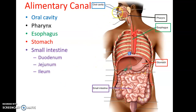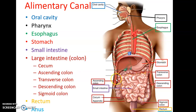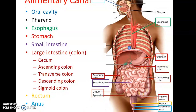The alimentary canal starts with the oral cavity, goes to the pharynx, and from there the esophagus carries food down to the stomach. The stomach leads into the small intestine, broken up into the duodenum, the jejunum, and the ileum. From there it goes to the large intestine: the cecum, the ascending colon, transverse colon, descending colon, sigmoid colon, rectum, anal canal, and finally the anus.